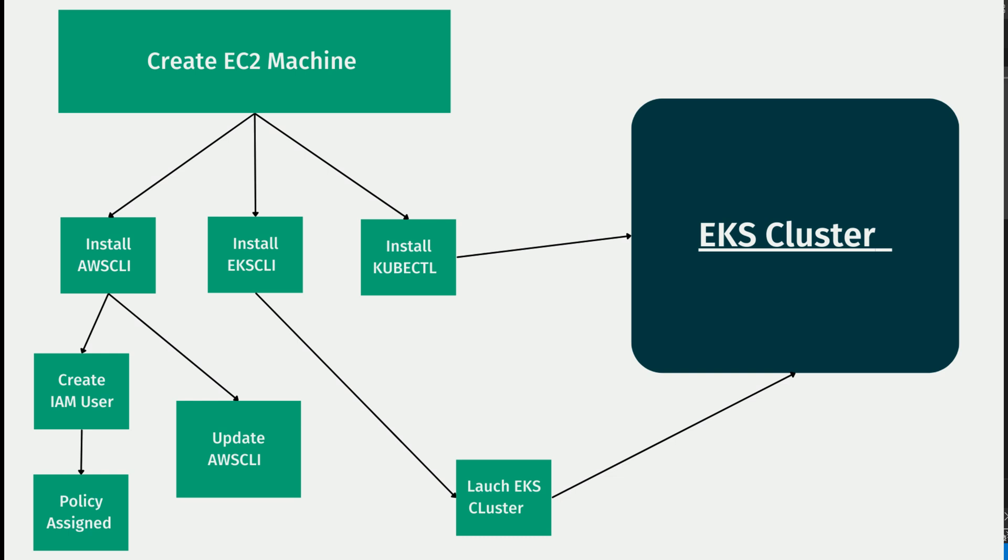The third thing is we are going to configure that user on the EC2 machine so we can fire up every command from there. After that we are going to install the prerequisites related to Kubernetes — kubectl and eksctl — and also upgrade the AWS CLI. Once we are done with all those things, we are going to launch the Kubernetes cluster using a command from the command line, not from the management console.